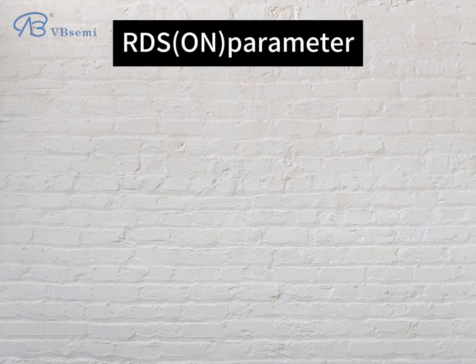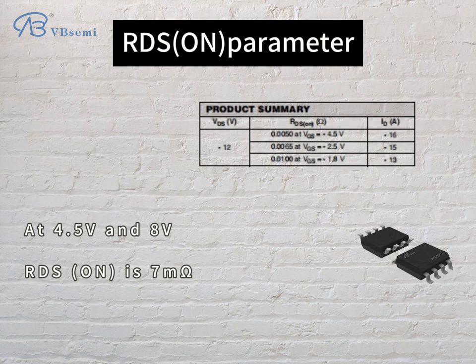RDS-on parameter: at 4.5V and 8V, RDS-on is 7 milli-Ohm.